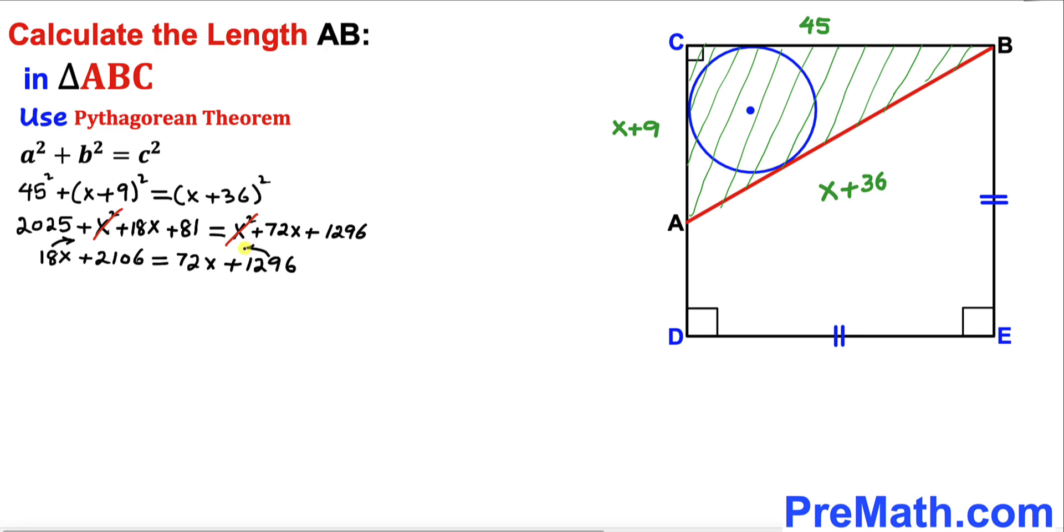Therefore we can write 72x - 18x = 2106 - 1296.